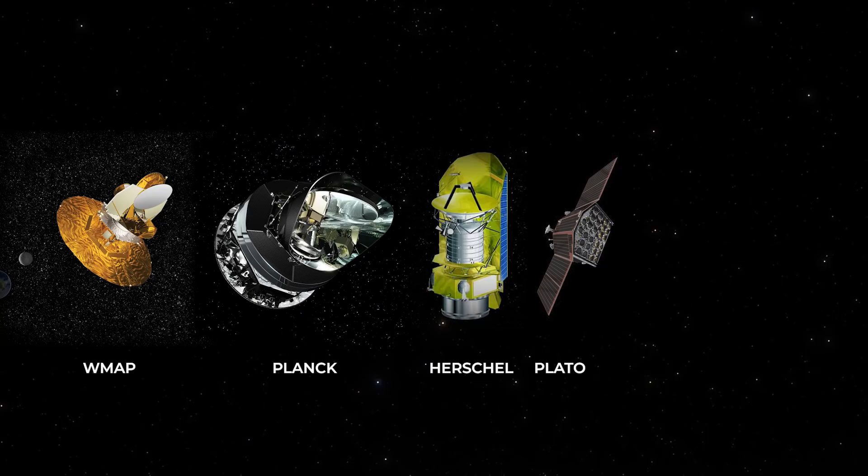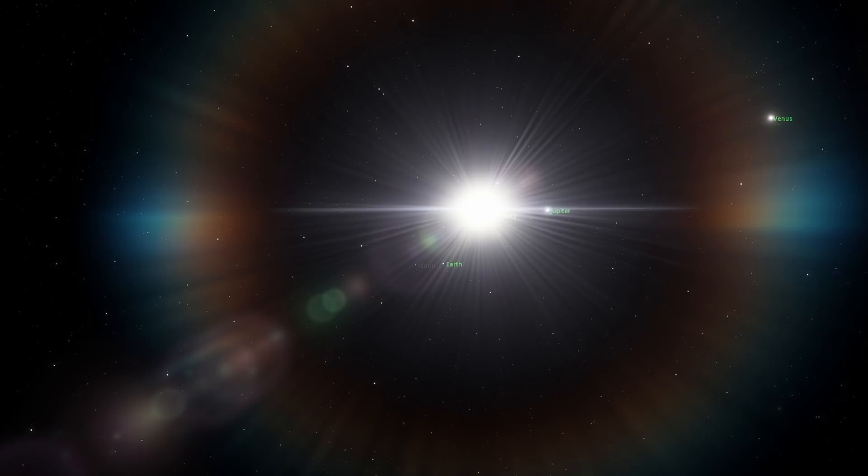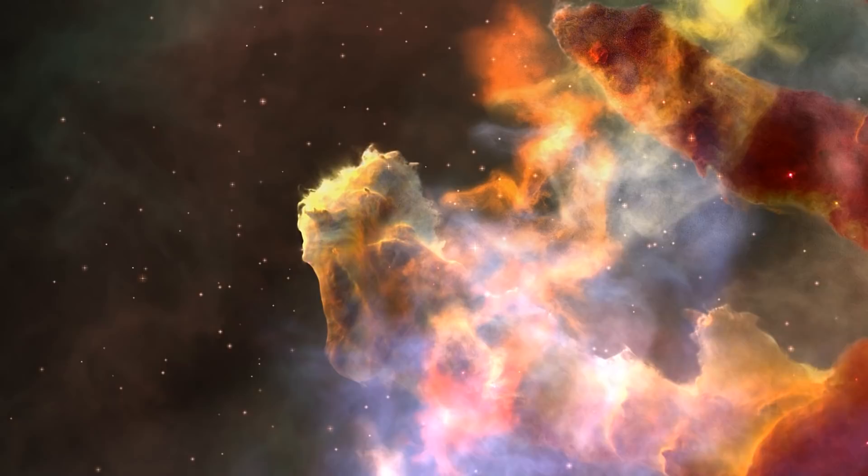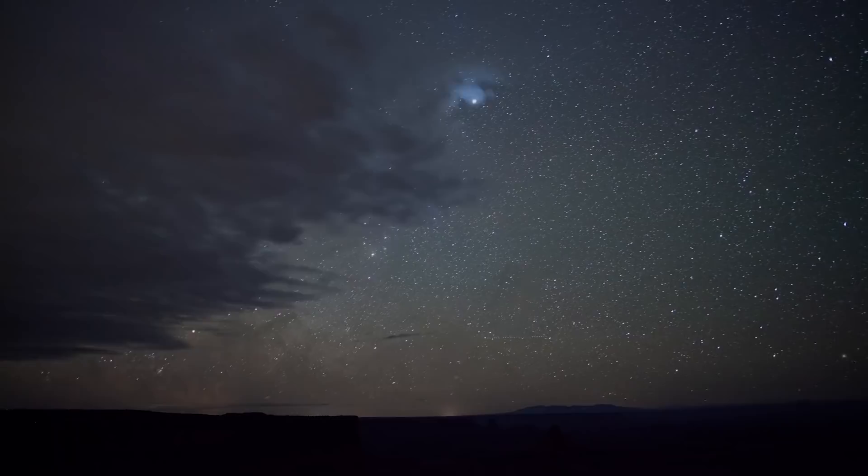The L2 point of the Earth-Sun system is home to the WMAP spacecraft, Planck, Herschel, Plato, and the recently launched James Webb Space Telescope. L2 is great for astronomy since a spacecraft is close enough to communicate with Earth easily, can maintain the Sun, Earth, and Moon behind the spacecraft for solar power, and provide a clear view of outer space for the telescopes with sufficient shielding.